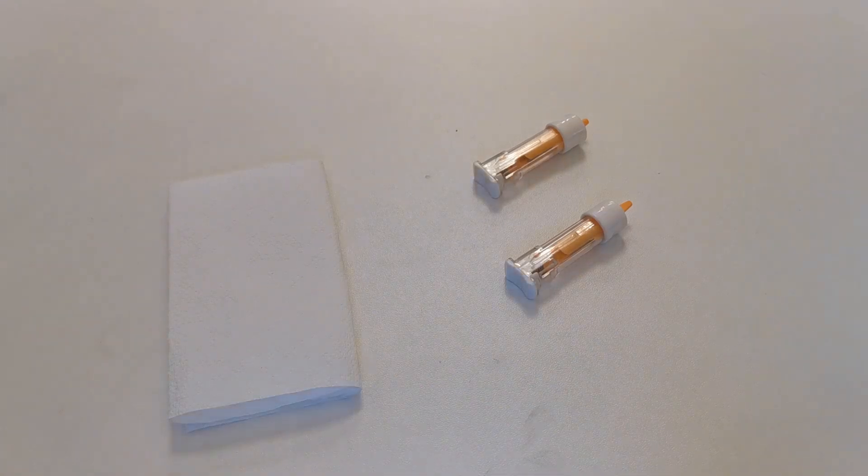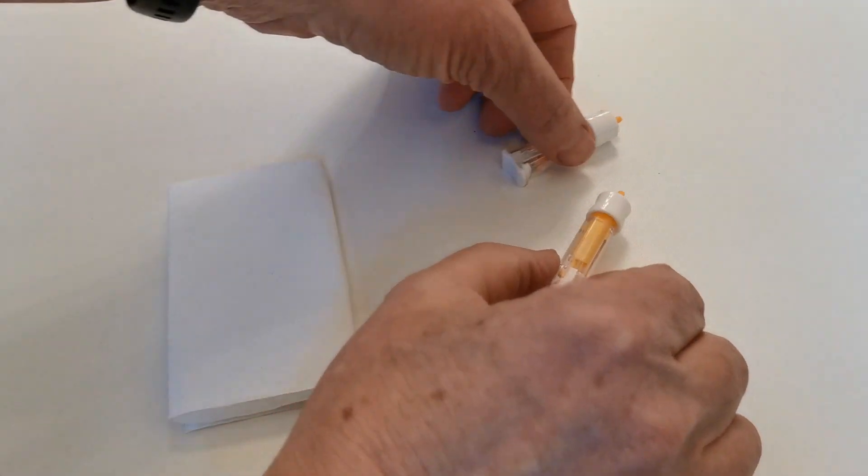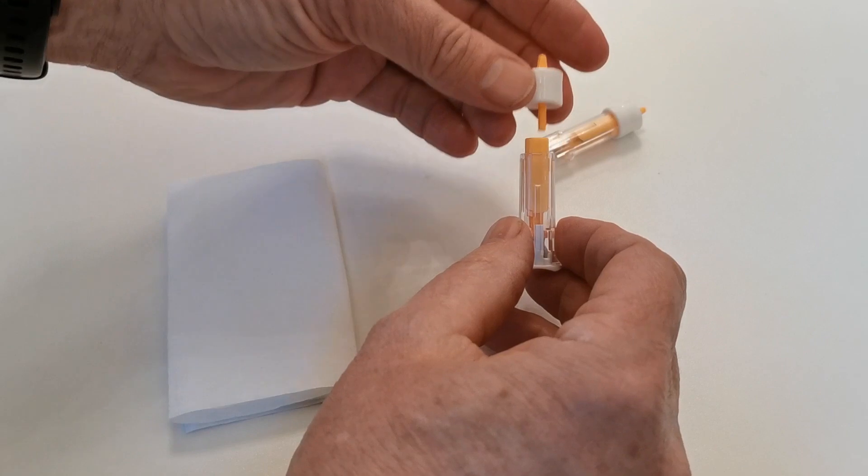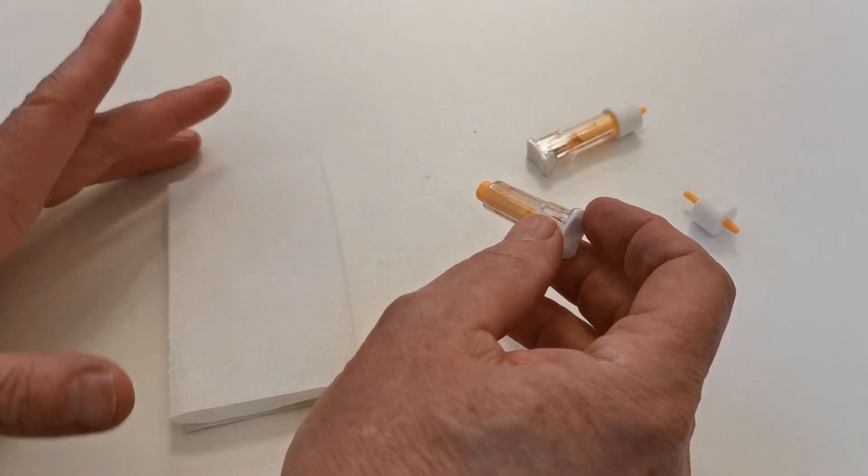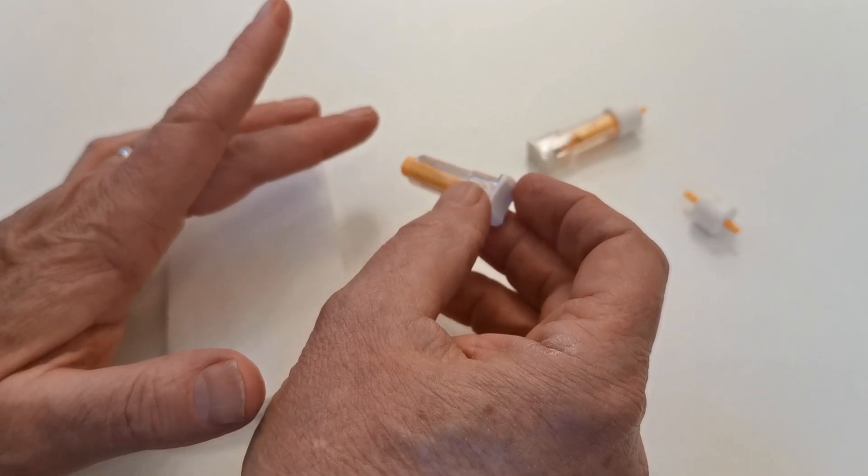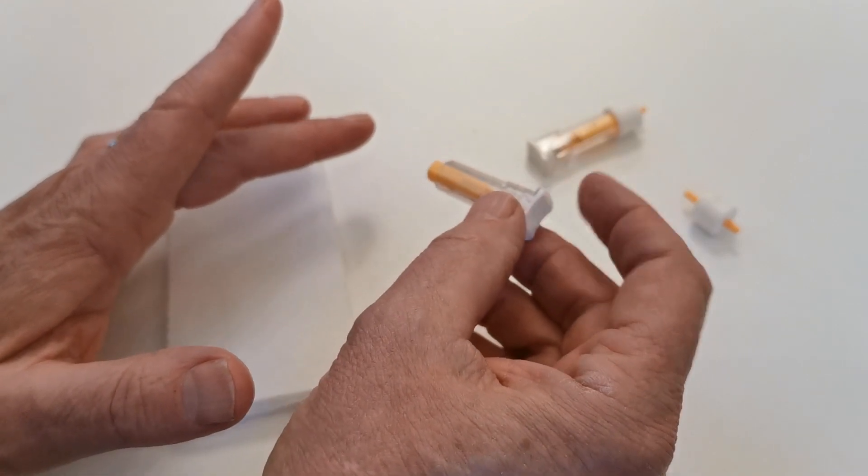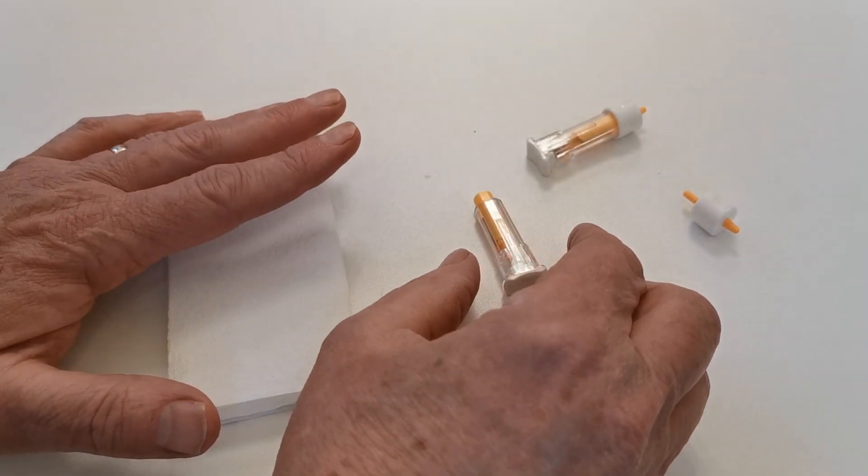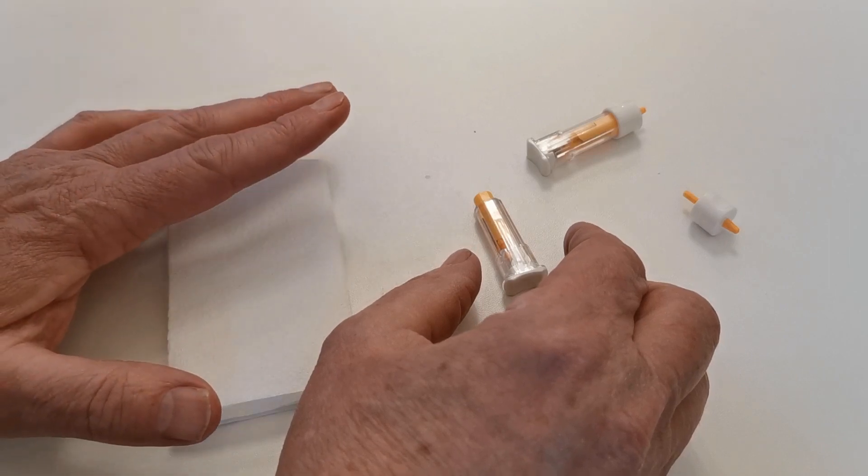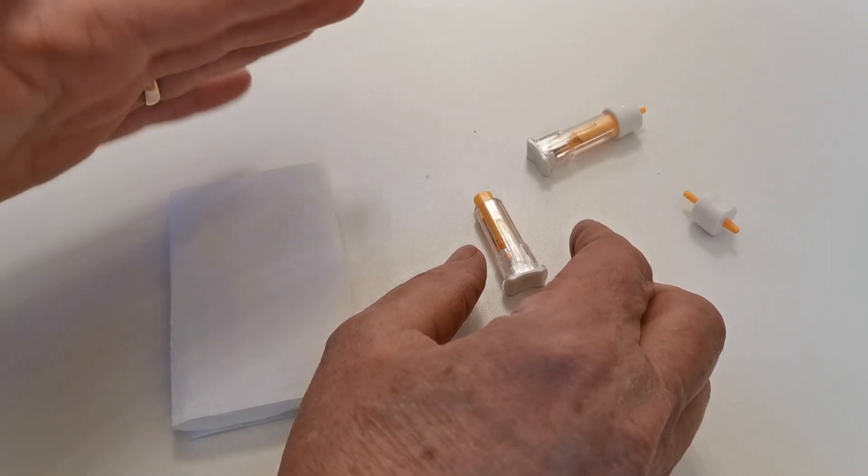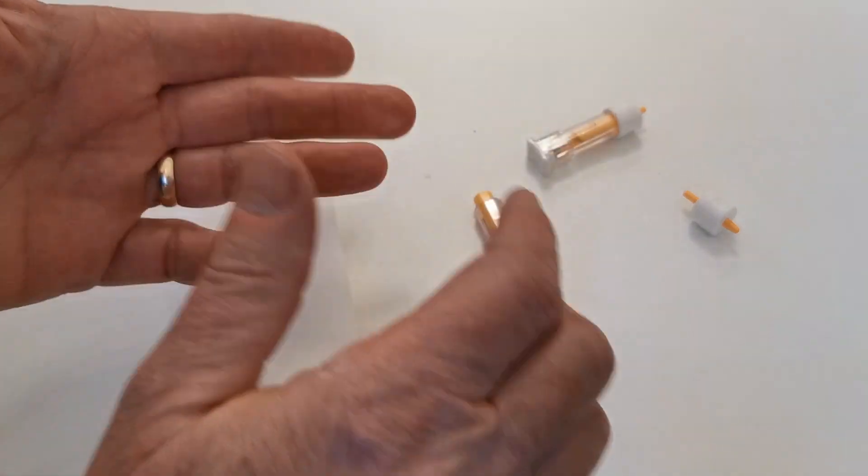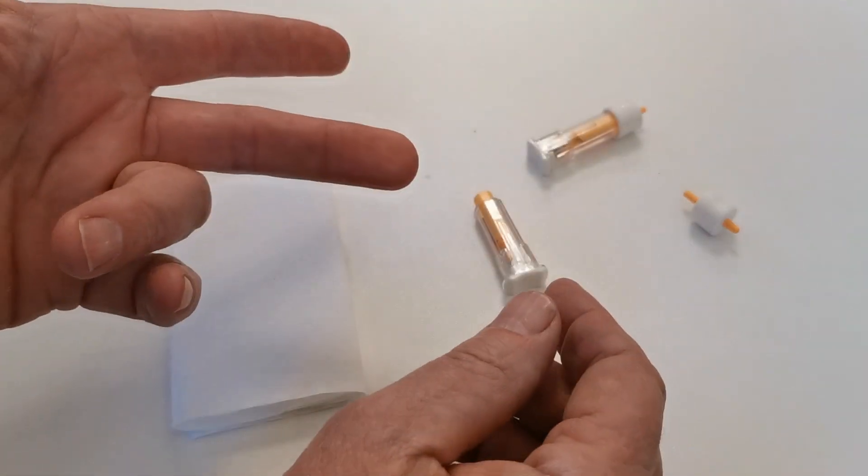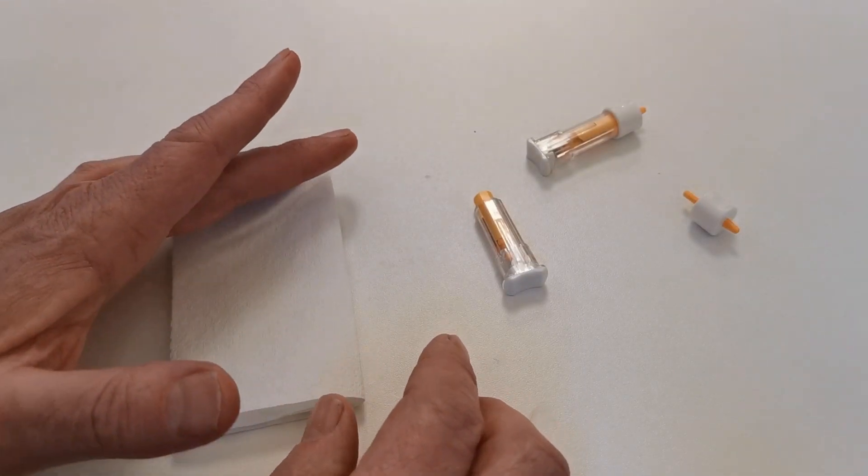Safety lancets come in a variety of different designs. These are typical. They'll have a cover on, which is removed, and then all you have to do to trigger these is to place them where you want to lance the finger and push down on the tip. Before you do that, it's important that you've washed your hands thoroughly and allowed them to completely dry. You also need to be in a nice warm environment so that you've got good capillary flushing and perfusion of your finger that you're about to stab.